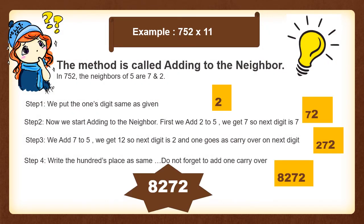Let's work out another example where we find the product when 752 is multiplied by 11. In step 1, we copy the digit at the 1s place, so we write 2. Then we keep adding the neighbor: 5 plus 2 is 7. Then 7 plus 5 is 12 — again a double digit, so we write 2 and carry 1 over to 7.